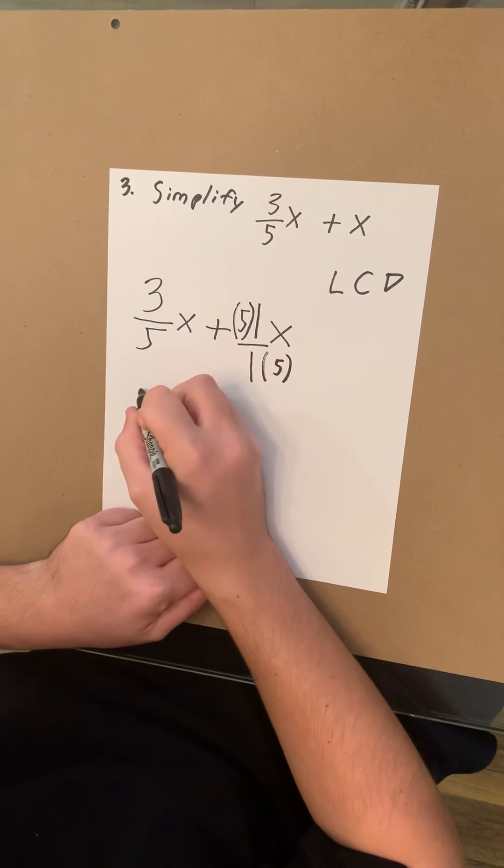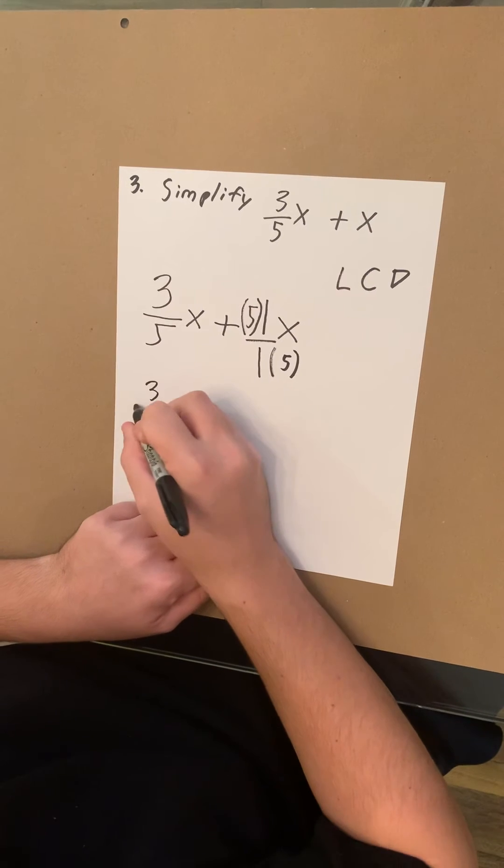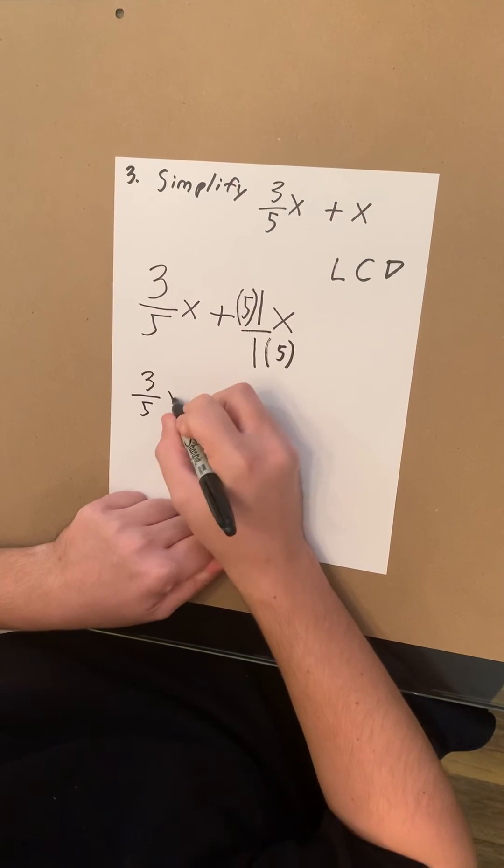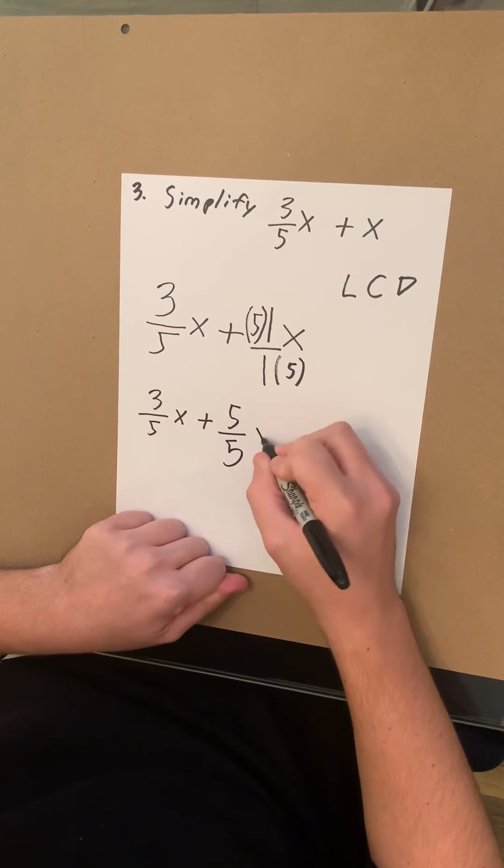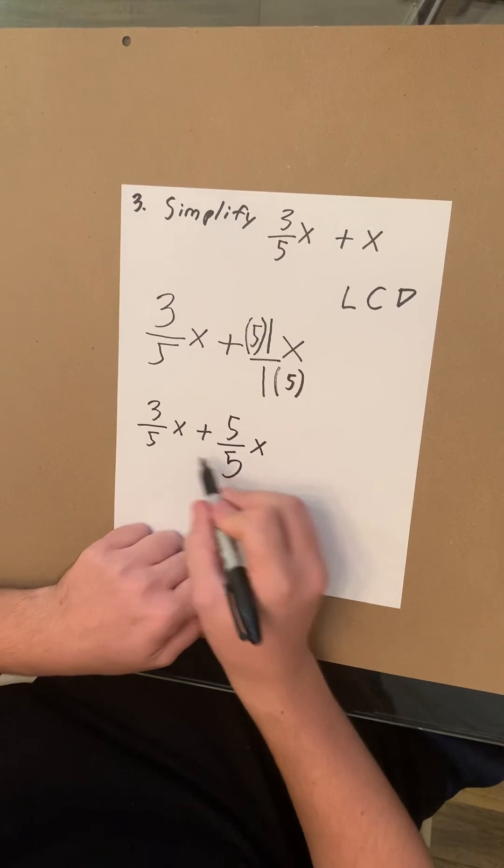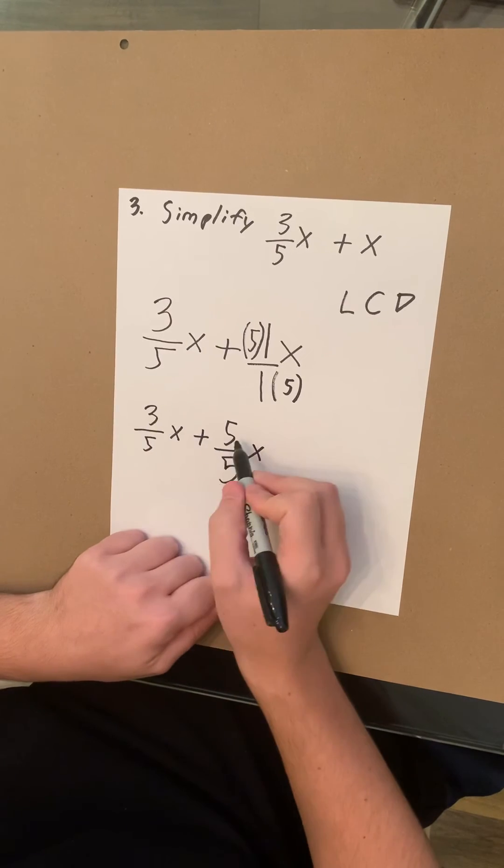So then we're gonna rewrite this down here. You have 3 over 5x plus 5 over 5x. Now that these are least common denominators, we can add these up easily.